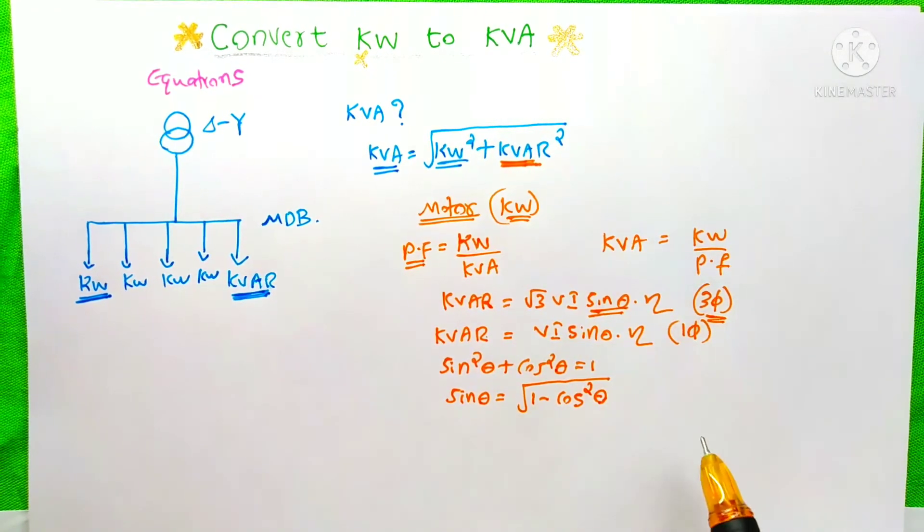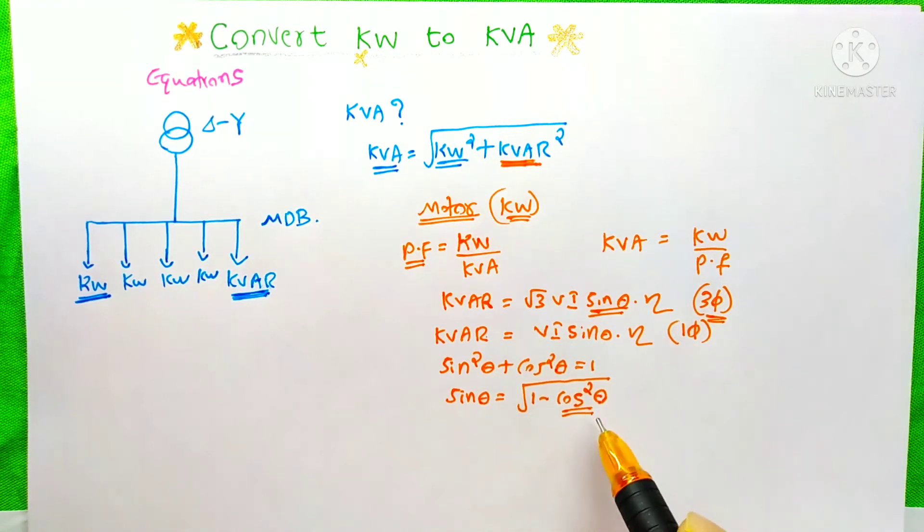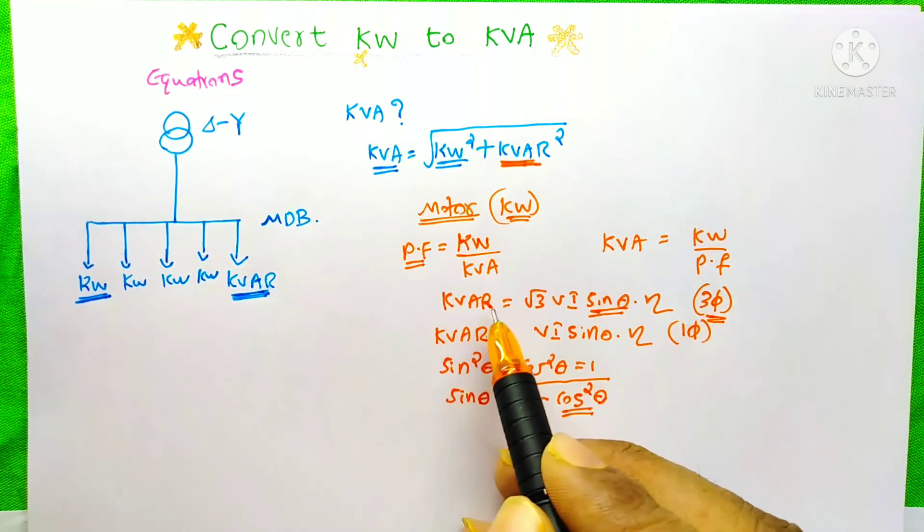I just rearranged this equation. And after getting this sine theta, put that sine theta in this equation. You know, this cos theta is nothing but the power factor on the motor's nameplate. After you calculate this kVAR,